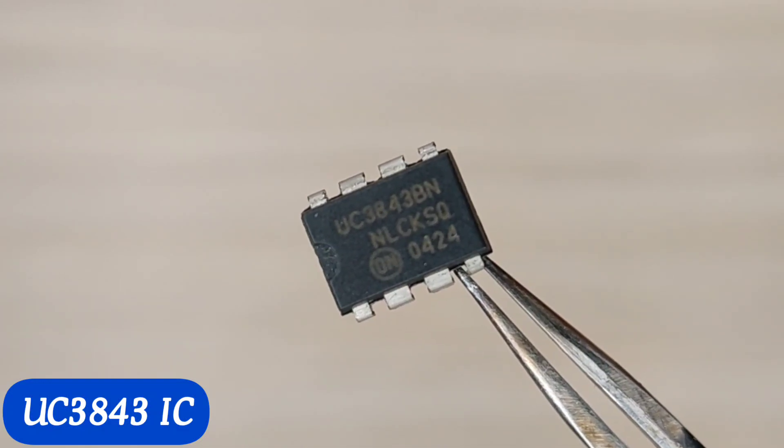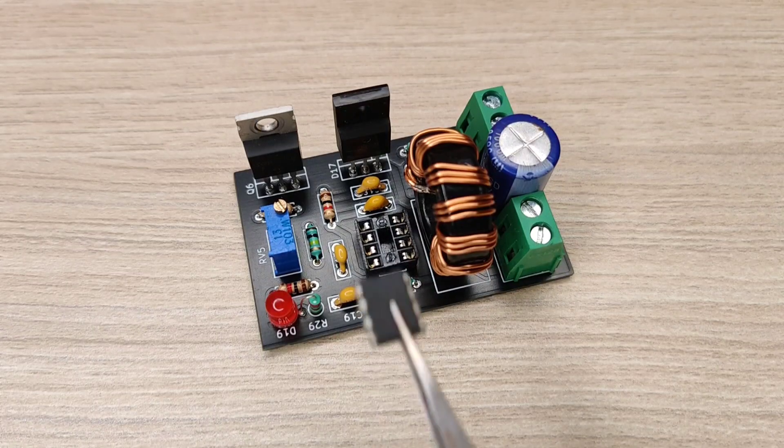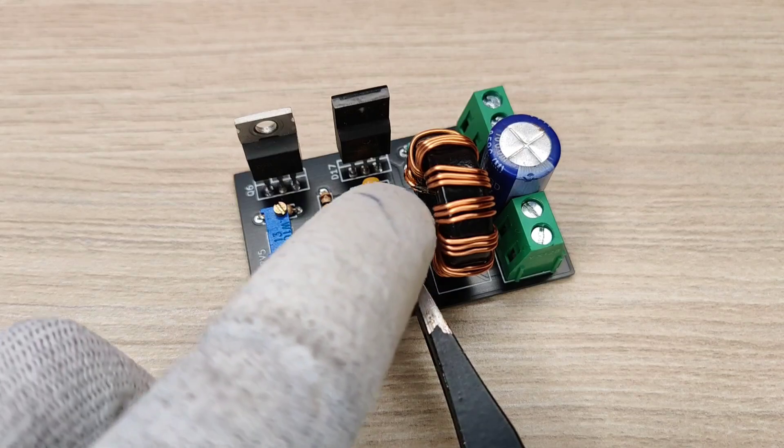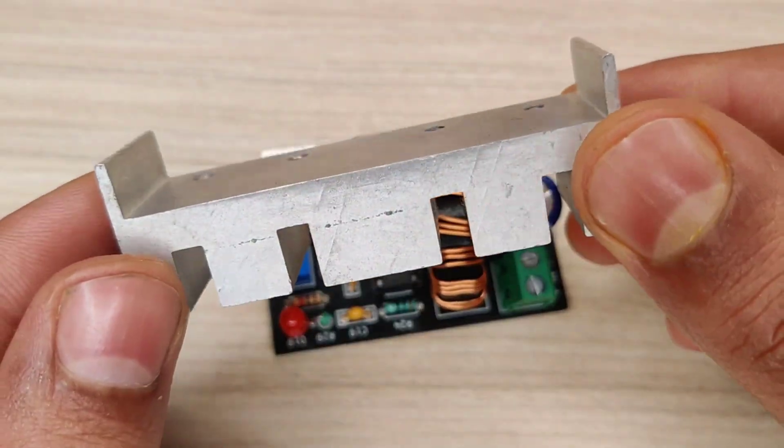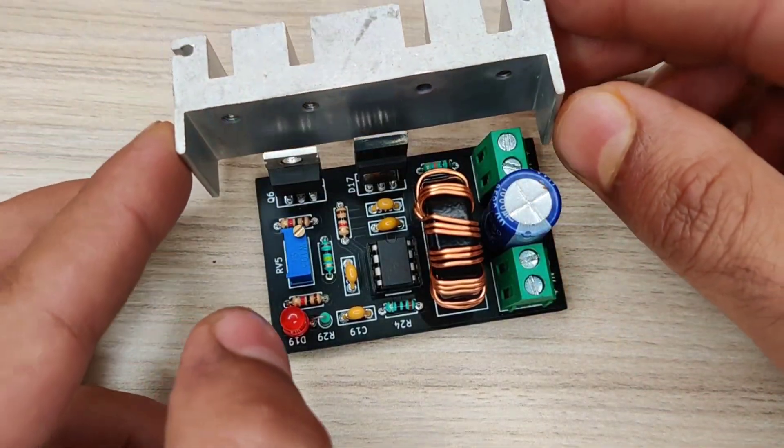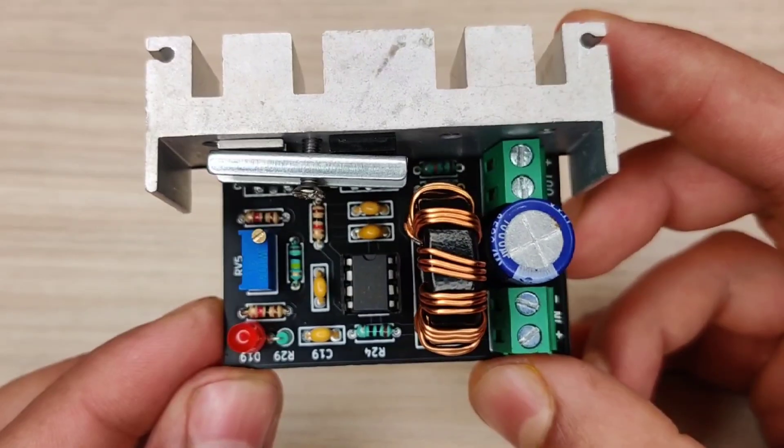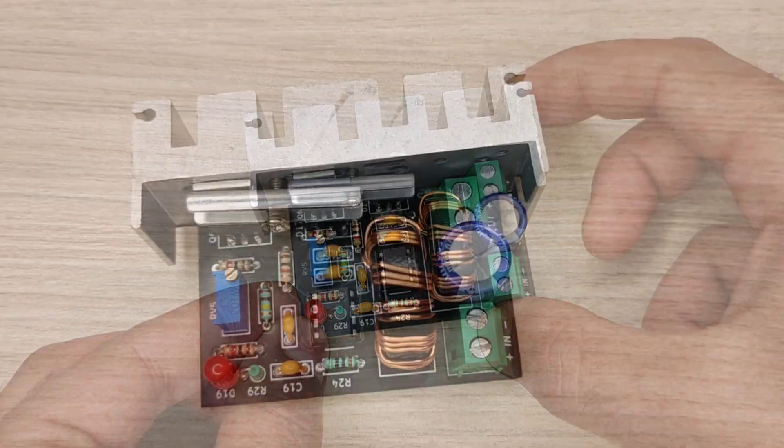Now I used 3843 current mode PWM IC to control this boost converter efficiently. Now use a good heatsink for heat dissipation and install it for the MOSFET and schottky diode. Now finally our circuit is ready to be tested.